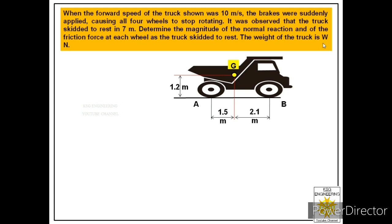The weight of the truck is W newtons. The truck was moving with a velocity of 10 meters per second when brakes were applied, and it skidded to rest in seven meters. We are asked to find the normal reaction at each wheel. The truck has four wheels — two rear wheels and two front wheels. We need to find reactions at each of the two rear wheels and each of the front wheels, as well as the friction force acting on each.